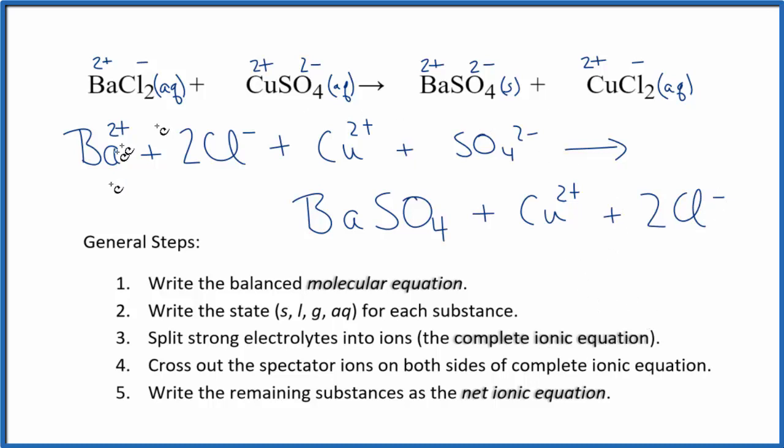So this is what we call the complete ionic equation. And now we can cross out spectator ions. They're on both sides of our complete ionic equation. So I see there's 2 Cl- here, two chloride ions in the reactants, two chloride ions in the products. Let's cross those out. Copper two plus here, copper two plus here. Cross them out.